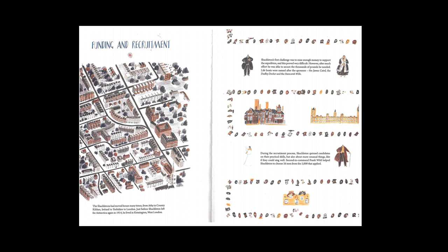However, after much effort, he was able to secure the thousands of pounds that he needed. Lifeboats were named after the sponsors: the James Card, the Dudley Docker, and the Stan Coombe Wills. So all three of those people put a lot of money into sponsoring Sir Ernest on his journey. During the recruitment process, Shackleton quizzed candidates on their practical skills, but also more unusual things — like if they could sing well. I wonder why Sir Ernest wanted to know if they could sing well. Have a think about that as we read on.